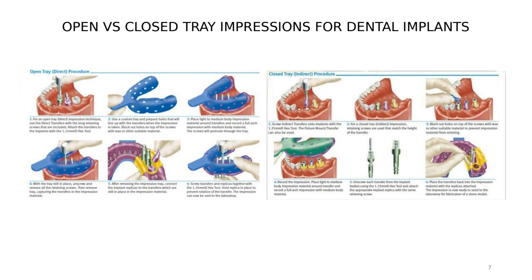Looking at a representation of open trays versus closed trays, we can see the difference in the impression coppings. For the open tray, the screw for the impression coping is longer because it has to penetrate the custom tray. For the closed tray, the screw is smaller — it does not penetrate the tray, as the impression coping with the screw is inserted into the impression material.